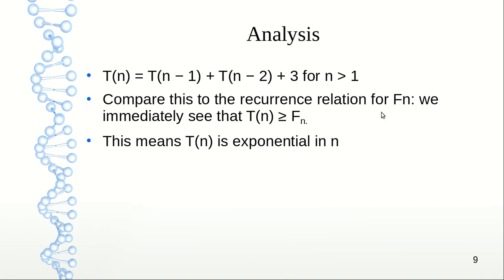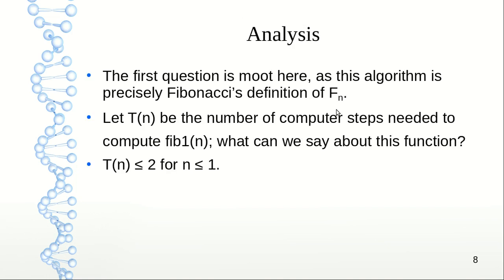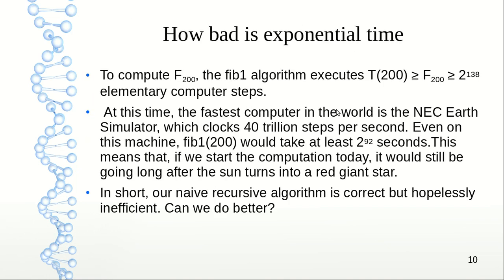Now compare this recurrence relation to fn, and we immediately see that Tn is greater than or equal to fn. That is quite obvious—fn equals fn minus 1 plus fn minus 2, and we have an additional constant here, so Tn will be greater than fn. This means Tn is exponential in n, as we showed that fn is exponential in n. So how bad are exponential algorithms? For example, if you just want to calculate F200, then it will take 2 to the power 138 elementary computer steps.